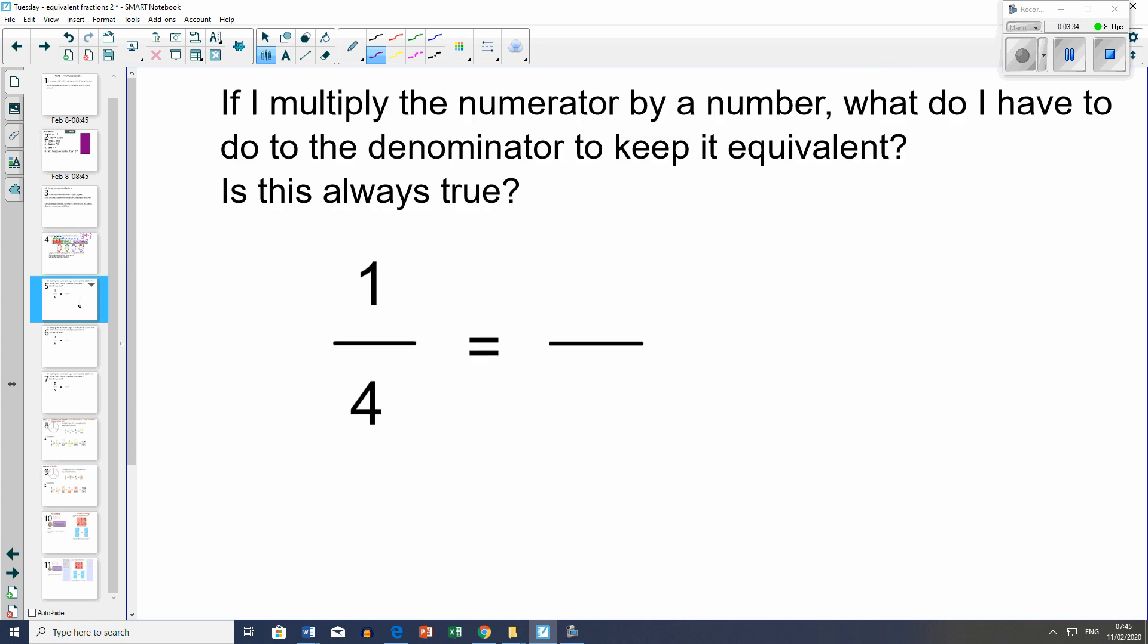Here, if I multiply the numerator by a number, what do I have to do to the denominator to keep it equivalent? Is this always true? Let's say I have this number here. What did I do to get to here in terms of multiplication? I multiplied by 4, so I must do the same here.